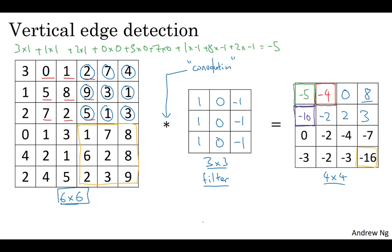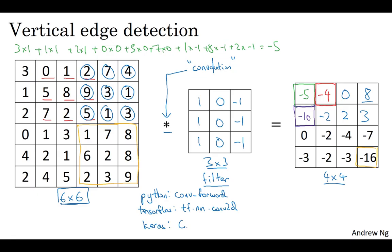You'll see why on the next slide. Just one other comment: if you implement this in a programming language, in practice most programming languages will have some different function rather than an asterisk to denote convolution. For example, in the programming exercise you implement a function called conv_forward. In TensorFlow, there's a function tf.nn.conv2d, and in the Keras programming framework there's a function called conv2d that implements convolution. All the deep learning frameworks with good support for computer vision will have some function for implementing this convolution operator.